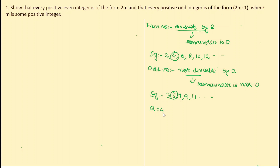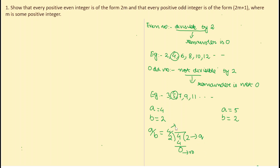Let a = 4 and b = 2. Dividing 4 by 2 gives quotient 2 and remainder 0. According to Euclid's Division Lemma, a = bq + r, so 4 = 2×2 + 0. From this we can say that any even number can be represented in the form 2q.